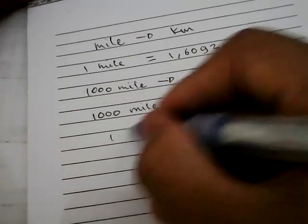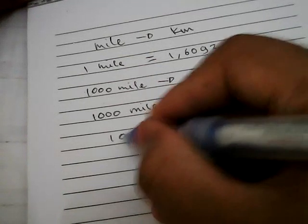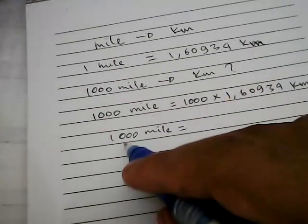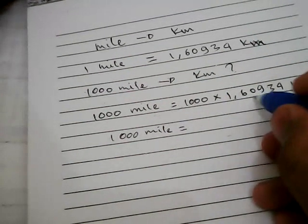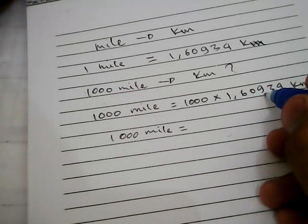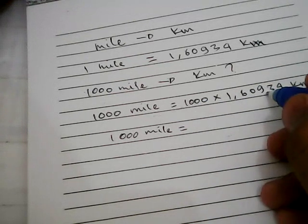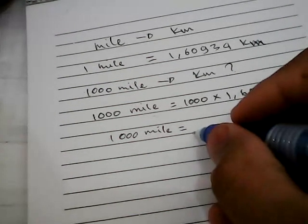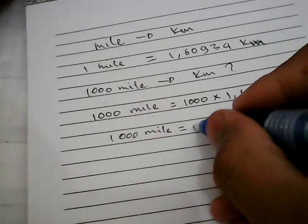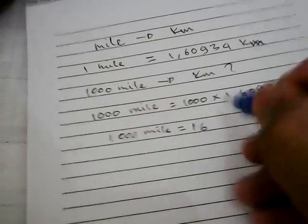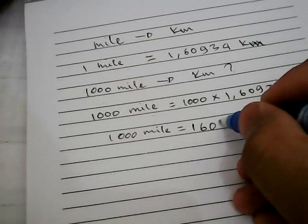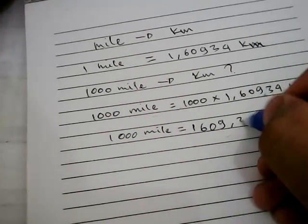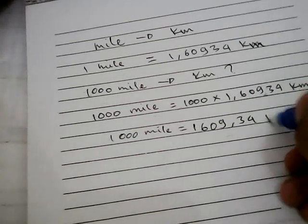So the result of this operation is, 1,000 miles is equal to... We'll put it in here. The result is 1,609.34 kilometers.